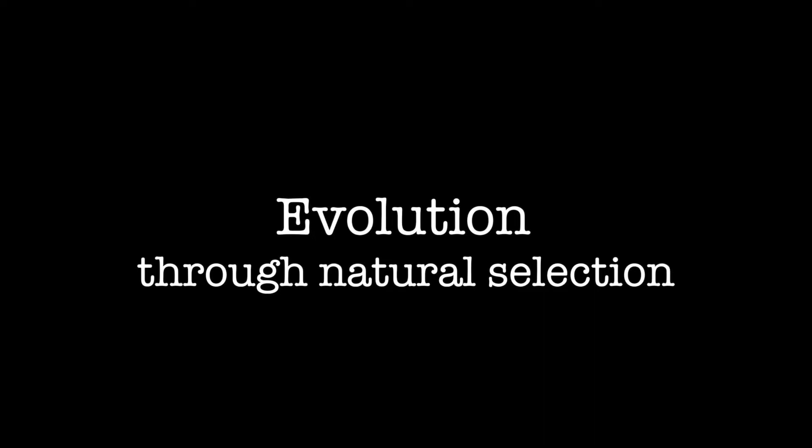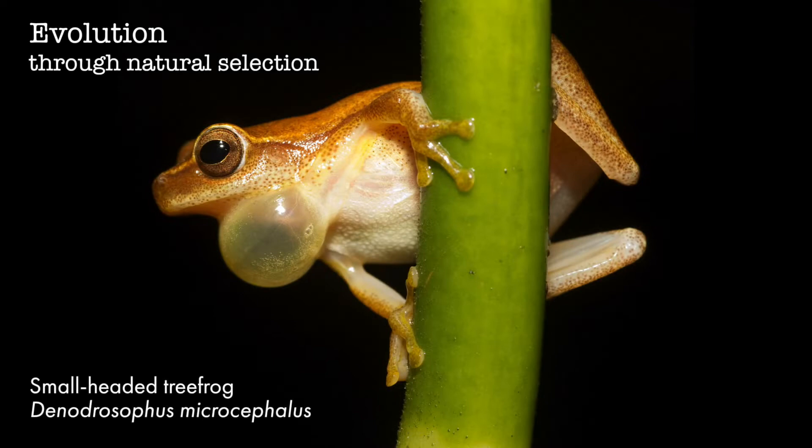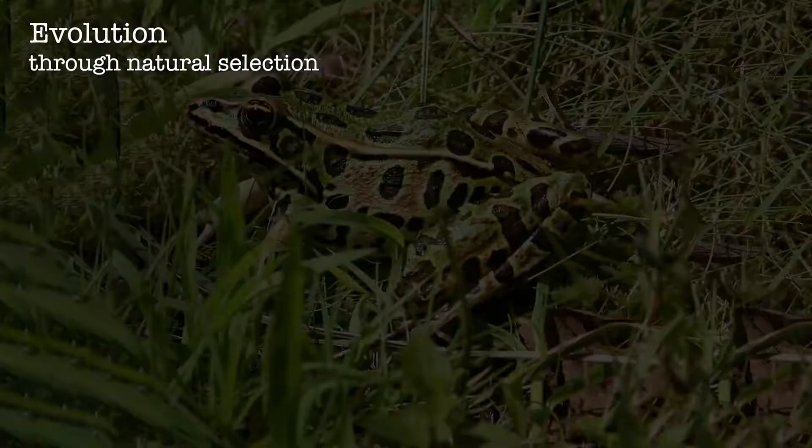Evolution through natural selection is the reason that the small-headed tree frog has big toes that it uses to grip onto trees. And evolution through natural selection is also the reason the leopard frog is green with brown spots — this coloring helps the frog blend in with its habitat. But exactly how does this process work?